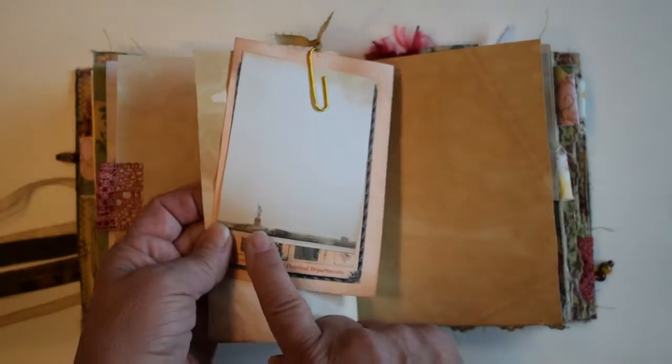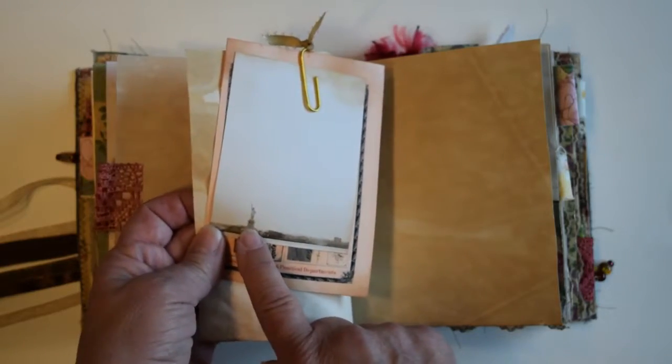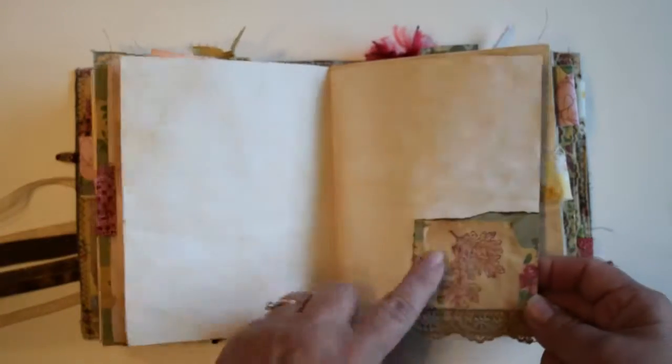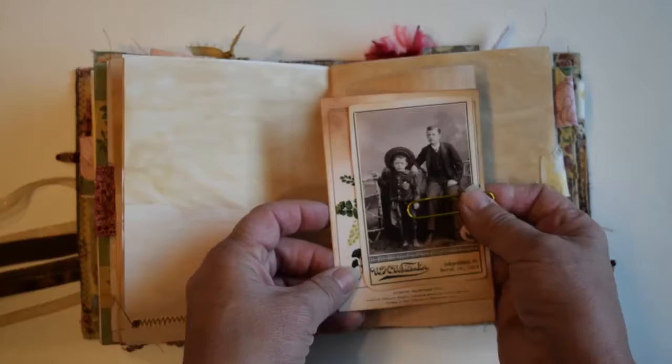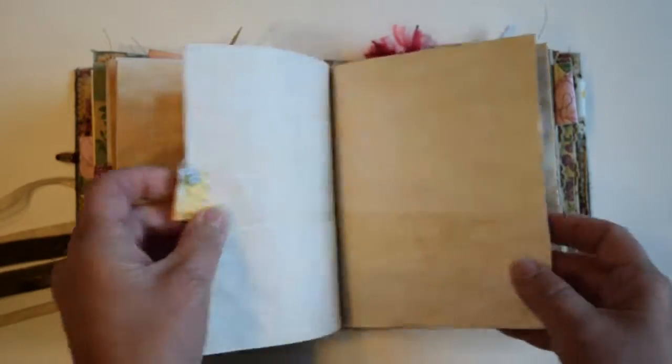You probably cannot see that, that is the picture, and that's the Statue of Liberty in the background there. A little collaging here with lace and paper. I clipped on some ephemera cards there. There's a fabric tab.